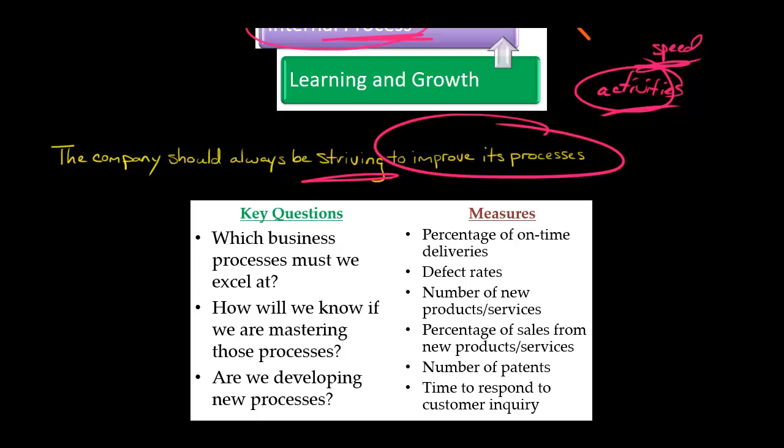If we think about a company like UPS, they're a delivery company. So we're going to think about the percentage of on-time deliveries. They need to make sure that if they say it's going to be there by 11 a.m. the next day, it's going to be there by 11 a.m. So the percentage of on-time deliveries would be very important to a company like that.